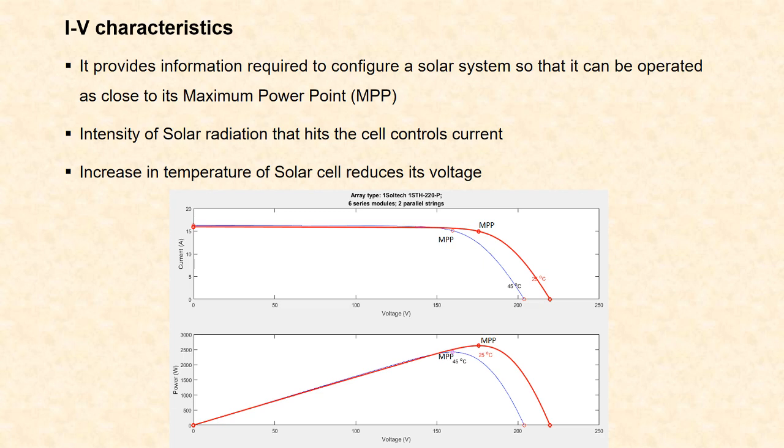In the IV characteristics, the dot represents the maximum power point. The current corresponding to the maximum power point is the peak current, and the voltage corresponding to the maximum power point is the peak voltage VMP. The standard temperature is 25 degrees Celsius and standard irradiance is 1000 Watt per meter square. Next is the voltage-power characteristics, where the maximum power point shifts when the temperature increases.